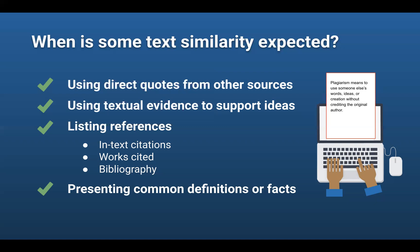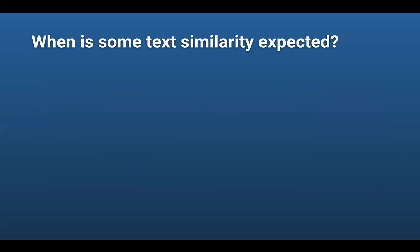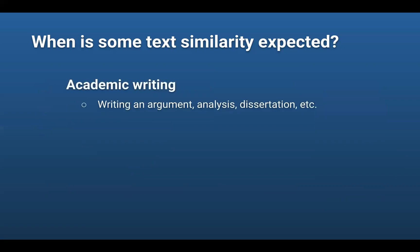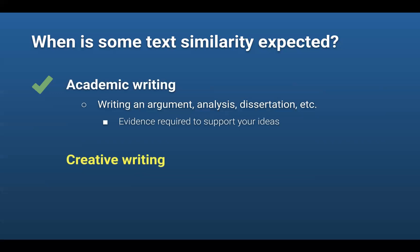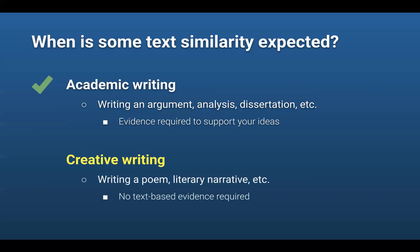In these instances, it's best to speak with your instructor to verify if citations are needed. To clarify, when writing for academic purposes, instructors expect to see a reasonable amount of text similarity. Any direct quotes or evidence pulled from sources that are quoted and cited are appropriate forms of text similarity. However, in creative genres like writing a poem or a story, text-based evidence is not needed to develop your ideas. Instructors expect little to no text similarity in these types of assignments.